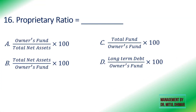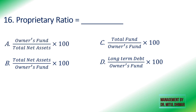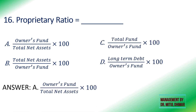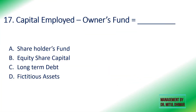Sixteenth: the proprietary ratio equals owners' fund divided by total net assets into 100, net assets divided by owners' fund into 100, total fund divided by owners' fund into 100, or long-term debt divided by owners' fund into 100? The answer is owners' fund divided by total net assets into 100.